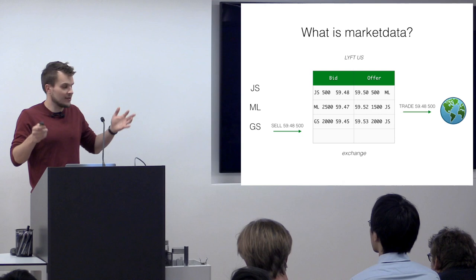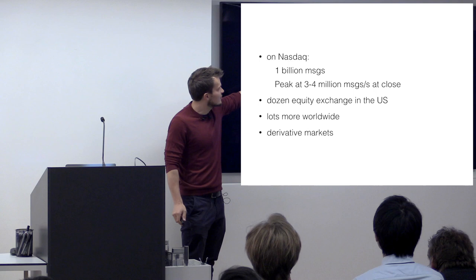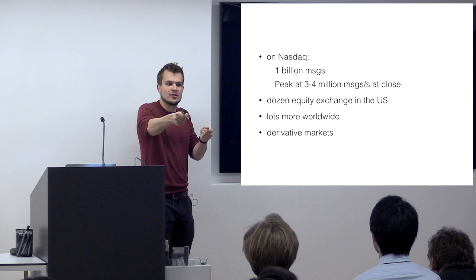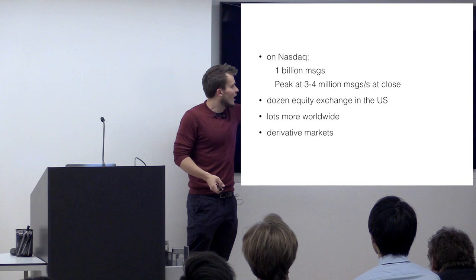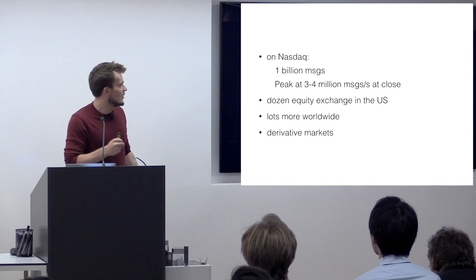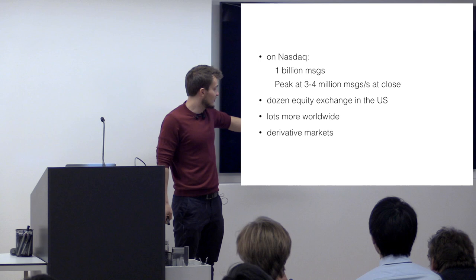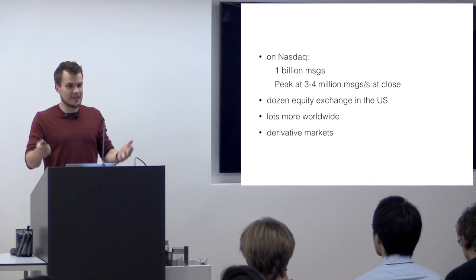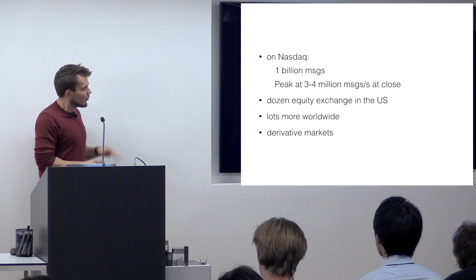I want to talk about what this firehose actually means in numbers. If we take Nasdaq, one of the biggest US equity exchanges, there are roughly a billion market data update messages per day, peaking at around three or four million messages at the close at 4pm — traditionally the busiest time of trading. There's not just Nasdaq; by now there are a dozen equity exchanges in the US, many more worldwide, and not just equity exchanges but also lots of derivative exchanges. So there's clearly a lot of data to consume and feed to your systems.